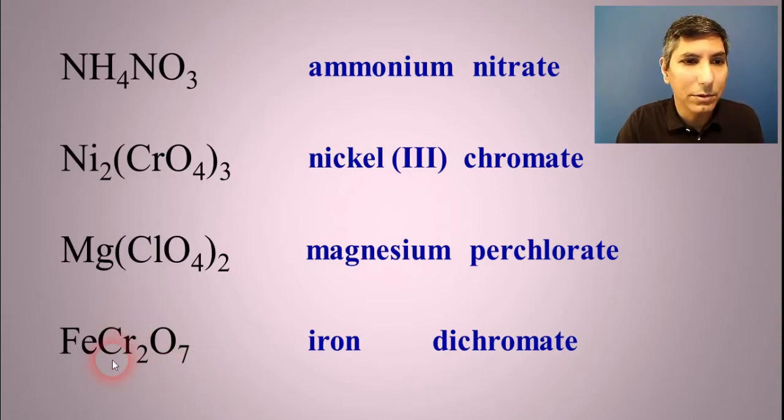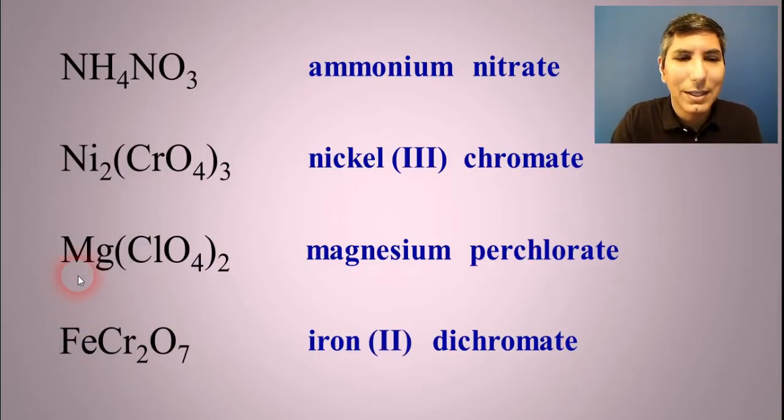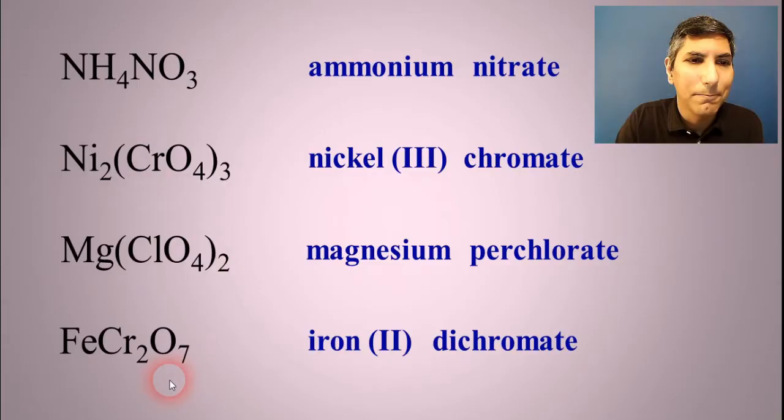So if the Cr2O7, that dichromate is a minus two, the iron had to be a plus two. So this one is iron(II) dichromate. Once again, you had to be kind of a detective here to figure out what the charge is on that transition metal. Since there are no additional subscripts placed down here, we know that they had to cancel out.